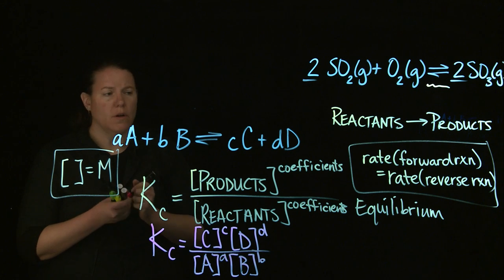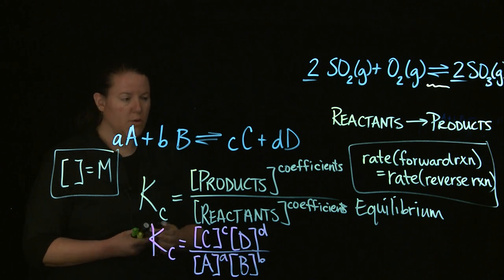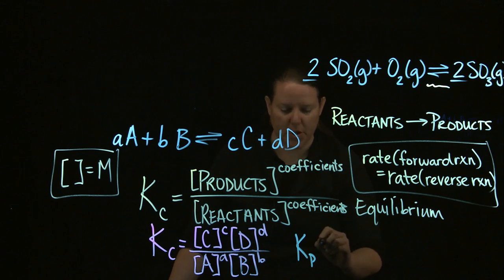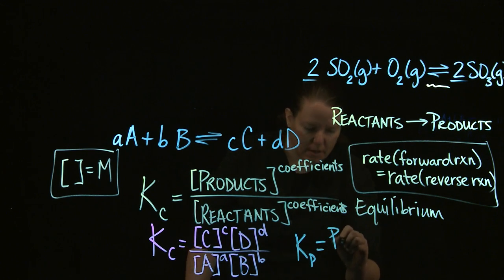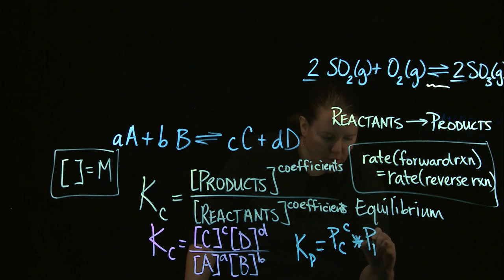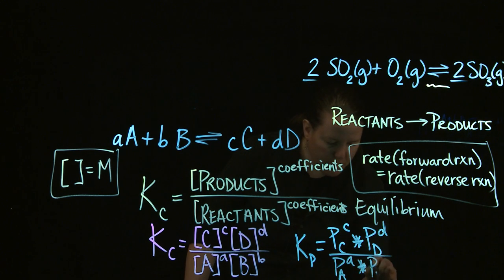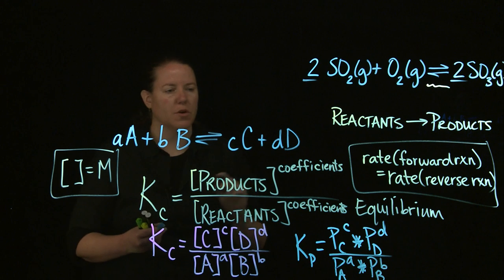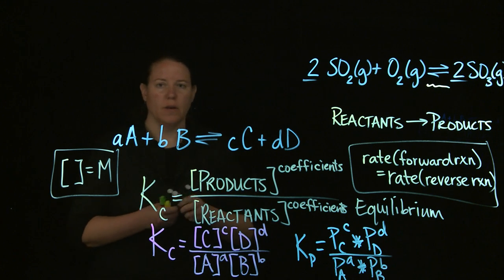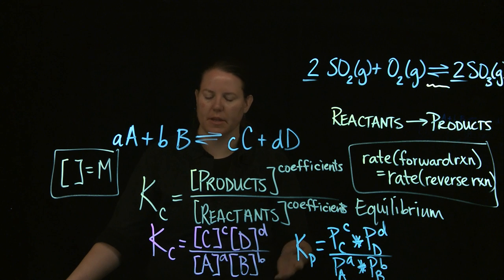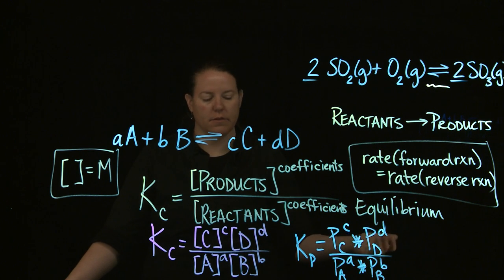We could also do this in terms of pressures if we have gases, giving us a different equilibrium constant called Kp, to signify pressures. That would be the exact same idea but using partial pressures: the partial pressure of C to the power of little c, times the partial pressure of D to the power of little d, over the partial pressure of A to the power of little a times the partial pressure of B to the power of little b. In general, when talking about equilibrium constants, we usually use concentration values, though sometimes pressures are used.